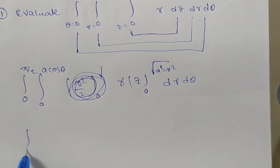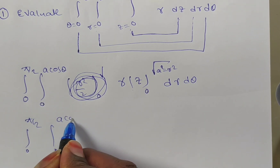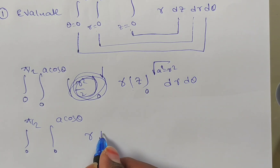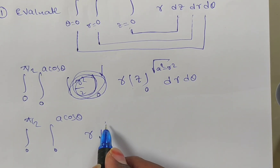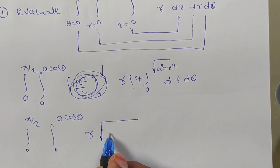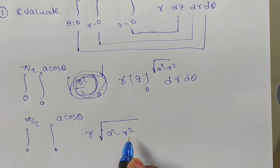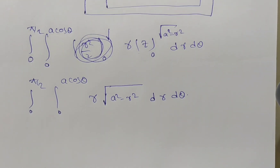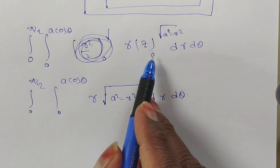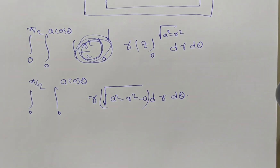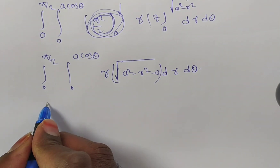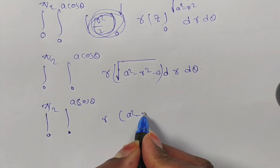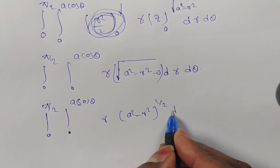So we now have the integral from 0 to pi by 2, integral from 0 to a cos theta, of r times the square root of a square minus r square, dr d theta. Substituting the upper limit gives square root of a square minus r square, and the lower limit gives 0, so the expression simplifies to r times the quantity a square minus r square to the power of 1 by 2, dr d theta.